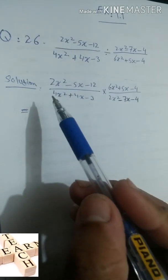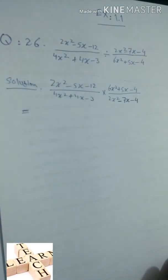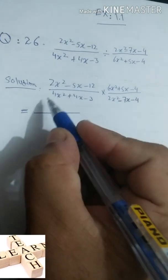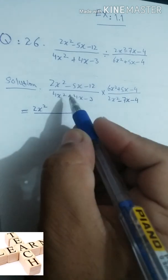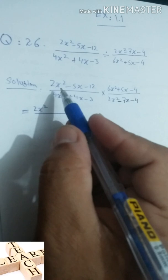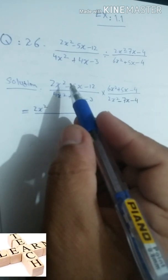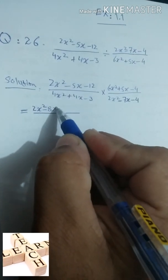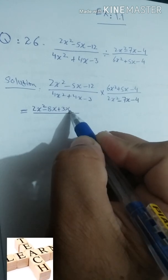The next step is factorization. We will factorize each expression. For 2x² − 5x − 12, we split the middle term: minus 5x becomes minus 8x plus 3x.